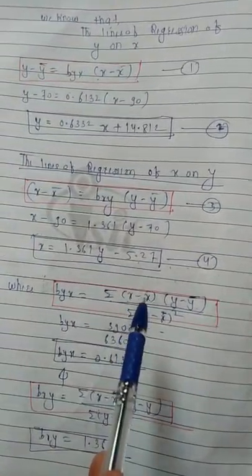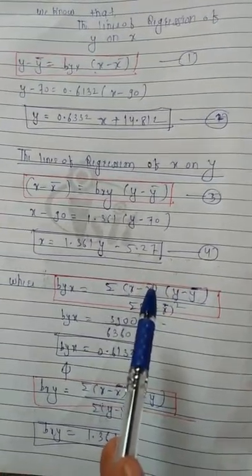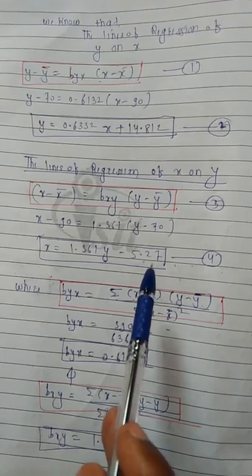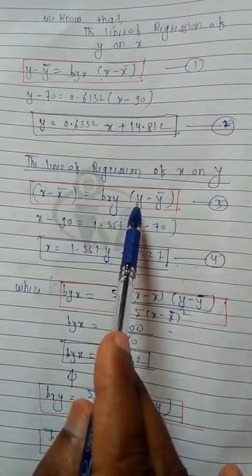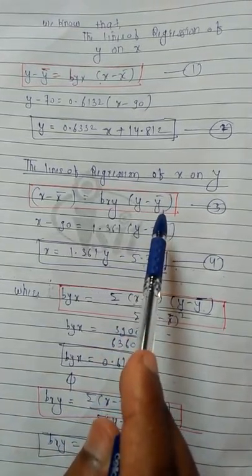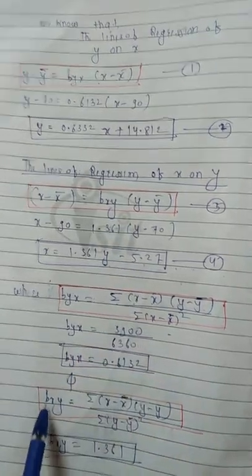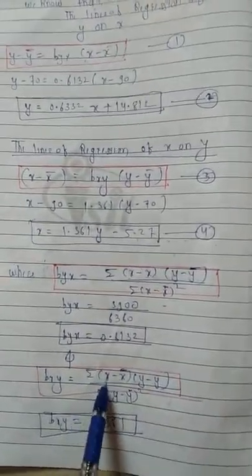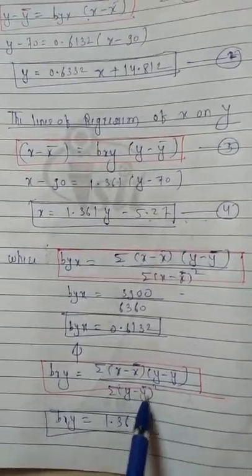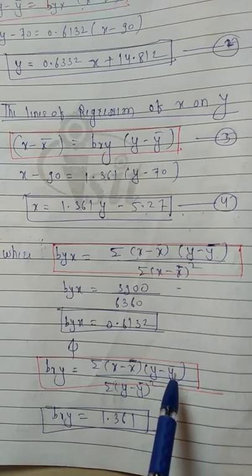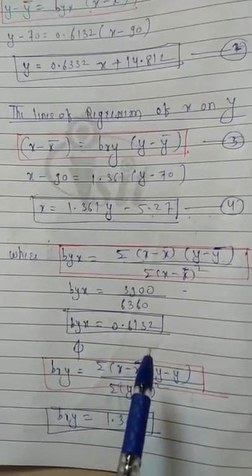Next, we consider the line of regression x on y. The equation is: x minus x-bar equals bxy times (y minus y-bar). For this we require bxy, which is calculated as: summation of (x minus x-bar)(y minus y-bar) divided by summation of (y minus y-bar) squared. So for the regression line x on y, bxy is needed.